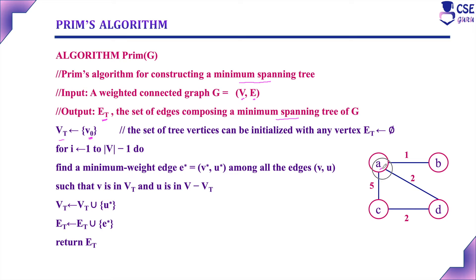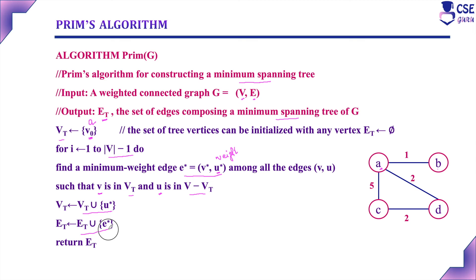In this graph, the starting vertex is A, and we are including A in the vertex set. For i equal to 1 to n-1, we find the minimum weight edge E = (V, U), where V is in V(T) and U is in V minus V(T). From A, there are three edges, and the smallest weight edge is A to B with weight 1. So we include vertex B and the edge A-B with weight 1 into the vertex set and edge set.